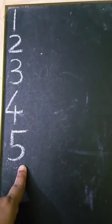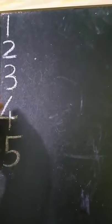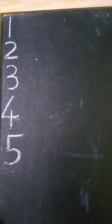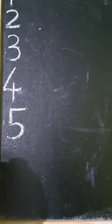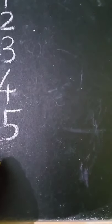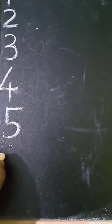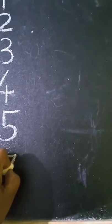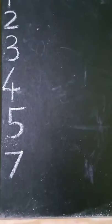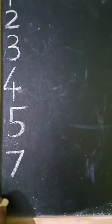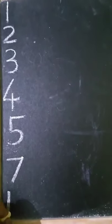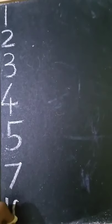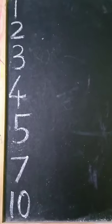So we have written the numbers one below the other: 1, 2, 3, 4, 5. Now children, we will write two more numbers we have learnt. And that is number 7 — sleeping line and a slanting line. And the last number is 10 — a standing line and an oval. Number 10.